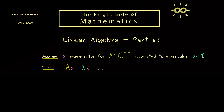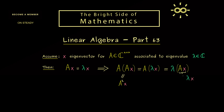Now it's no problem at all to multiply both sides with the matrix A again from the left-hand side. So we have A times Ax on the left and A times λx on the right. Using the associativity of matrix multiplication, we get A² times x on the left and λ² times x on the right. Therefore x is also an eigenvector for A², with associated eigenvalue λ².